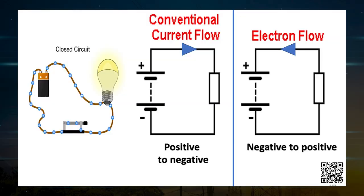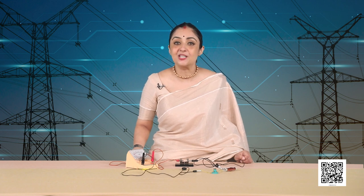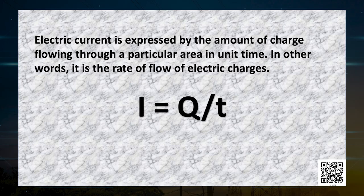Electrons were not known at the time when the phenomena of electricity was first observed. So, electric current was considered to be the flow of positive charges, and the direction of flow of positive charges was taken to be the direction of electric current. Conventionally, in an electric circuit, the direction of electric current is taken opposite to the direction of flow of electrons, which are the negative charges. If the net charge Q flows through any cross-section of a conductor in time T, then the current I through the cross-section is I = Q / T.